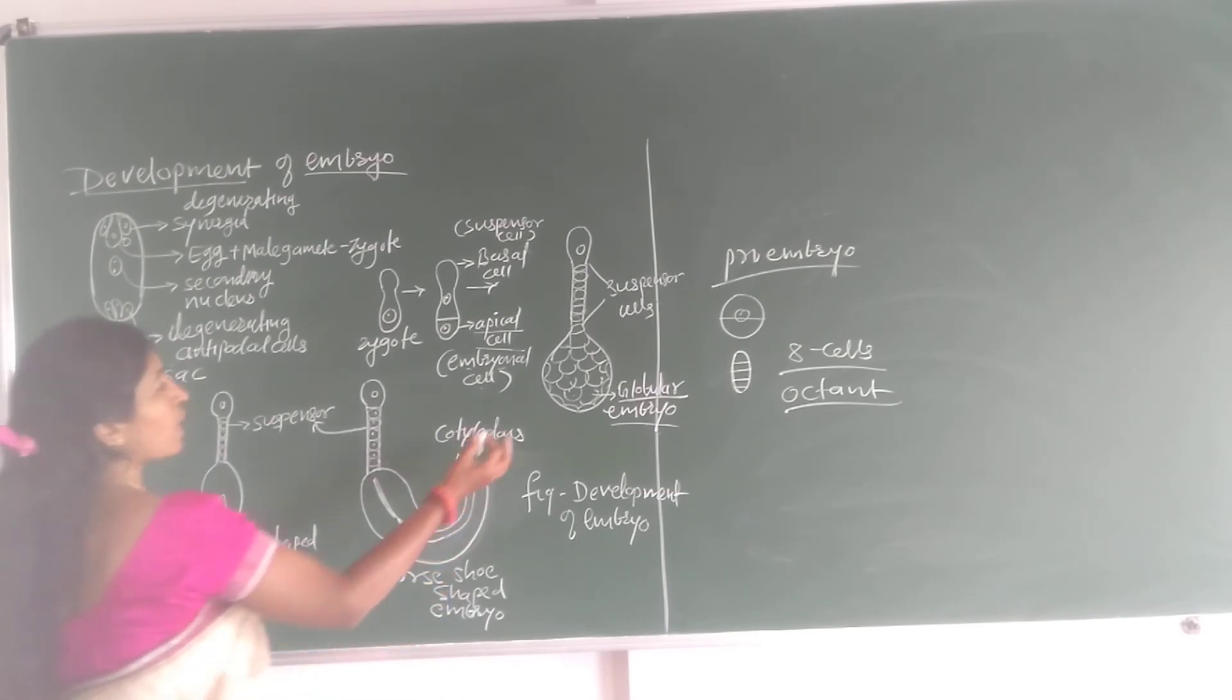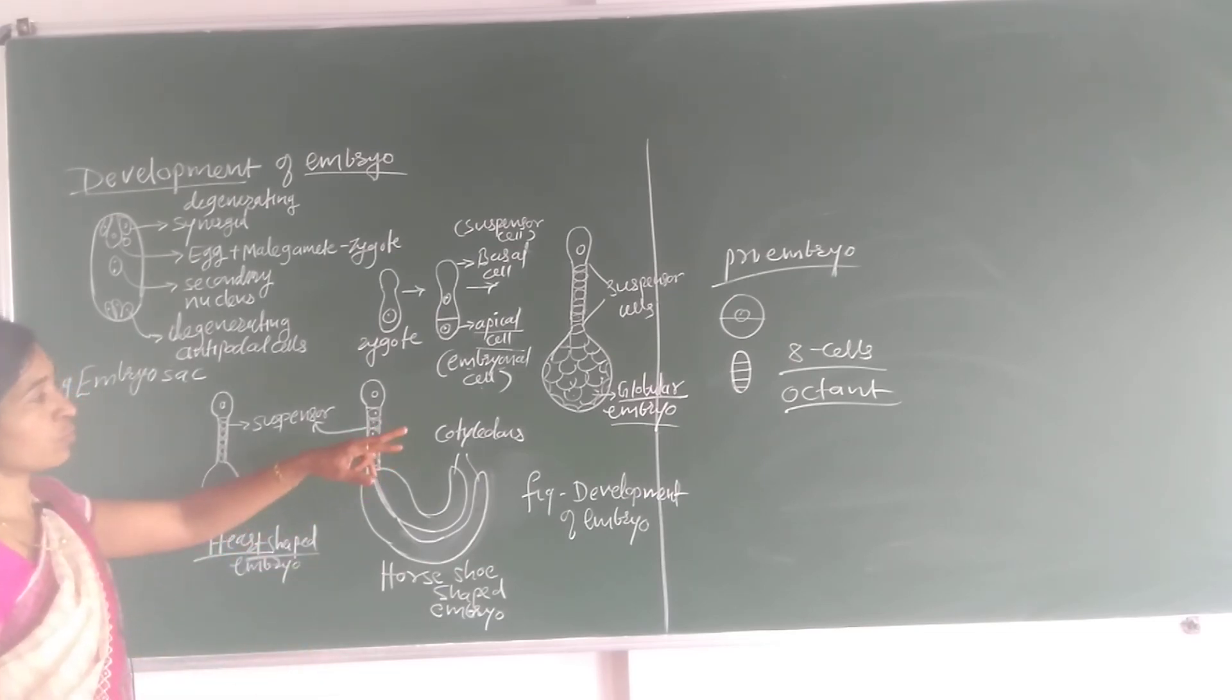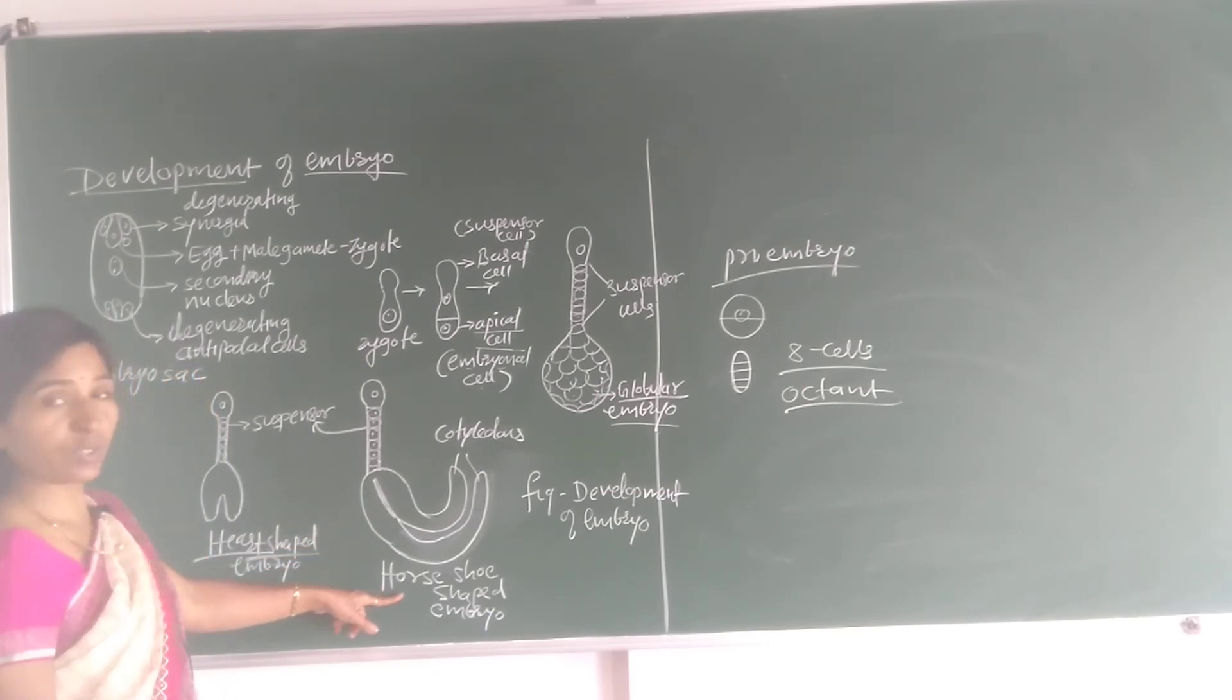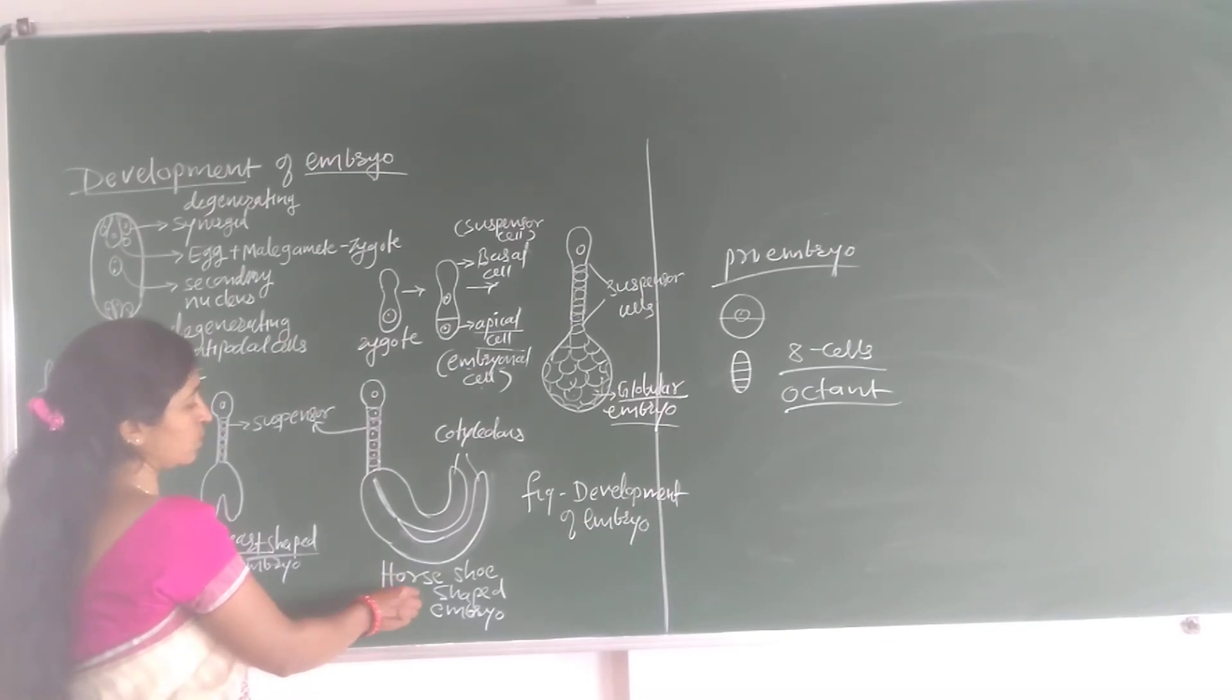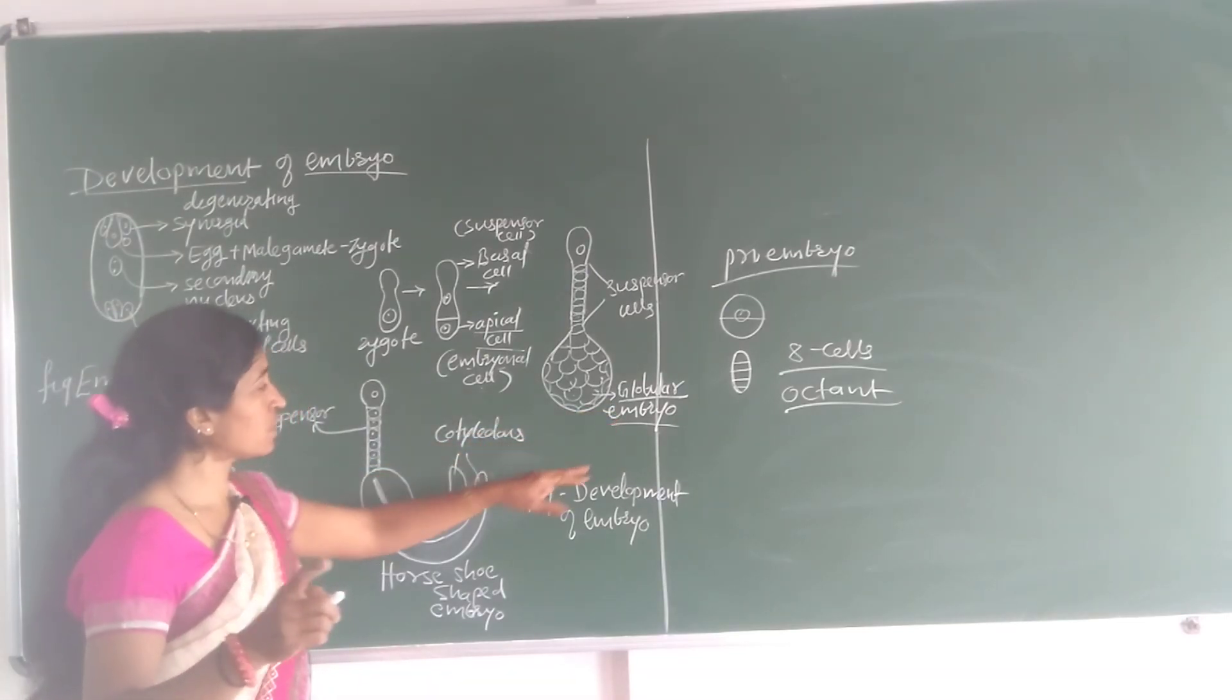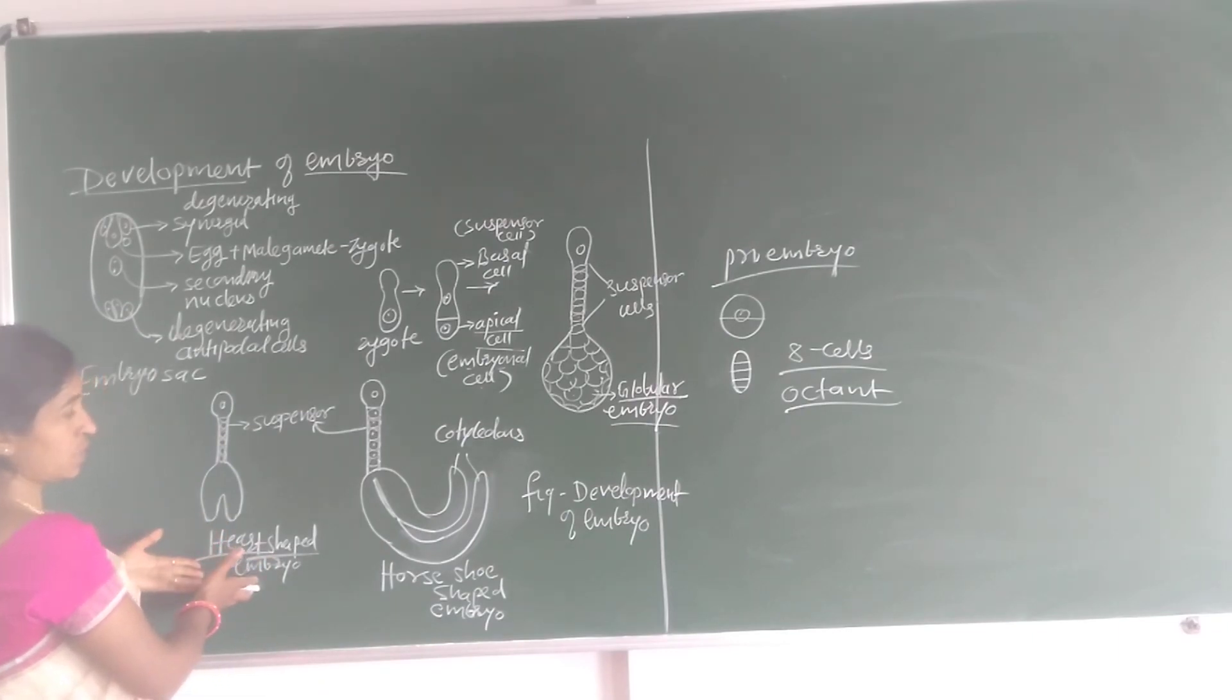And later on this globular mass of cells takes a shape just like a heart shape. This globular embryo, globular mass of cells takes a heart shape structure or heart shape embryo. Then this heart shape embryo changes the shape into a horseshoe shape structure. And in this horseshoe shape structure we observe an embryonal axis. This globular mass changes into a heart shape and heart shape changes into a horseshoe shape.